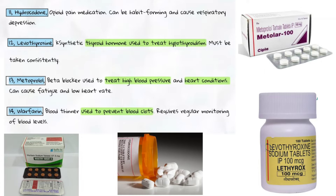11. Hydrocodone — an opioid pain medication. Can be habit-forming and cause respiratory depression. 12. Levothyroxine — a synthetic thyroid hormone used to treat hypothyroidism. Must be taken consistently.